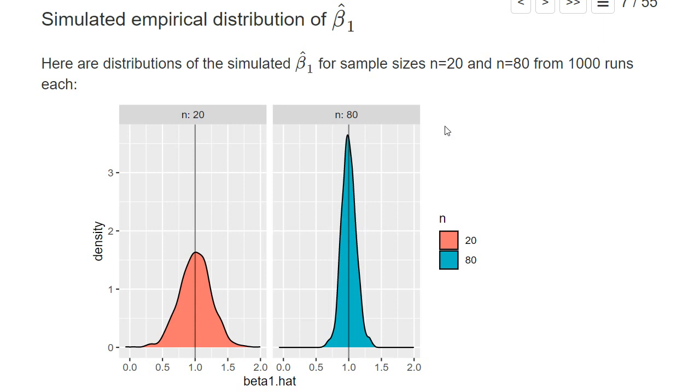Indeed, if in our simulation we would increase the sample size further and further, the standard error of beta_1 hat would converge towards zero. And this means beta_1 hat would actually converge against this true value beta_1.